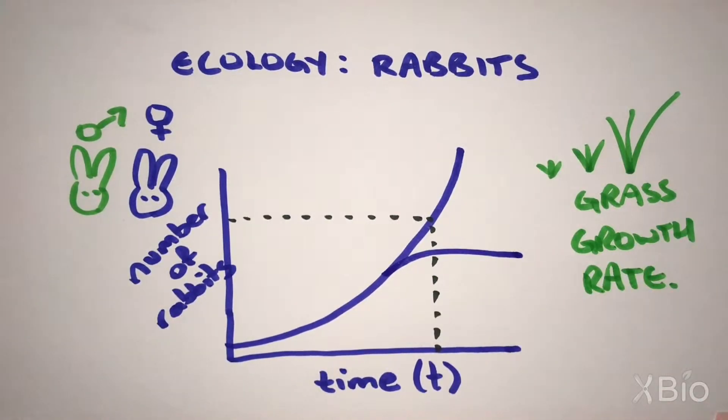But if there is a limited rate of food production, grass growth, the number of rabbits will increase to a maximum population size where they begin to starve.